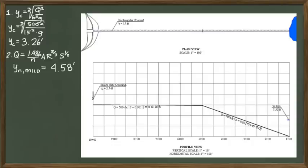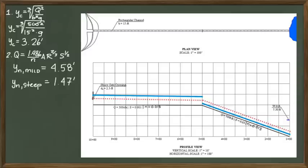For the normal depth in the steep channel, I get 1.47 feet. It helps to visualize the solution better if you sketch in the normal and critical depth to your design drawing. Completing this step allows us to classify each segment of the channel as mild or steep.